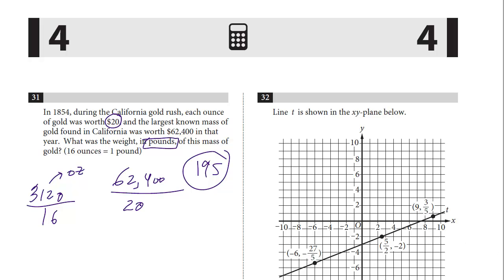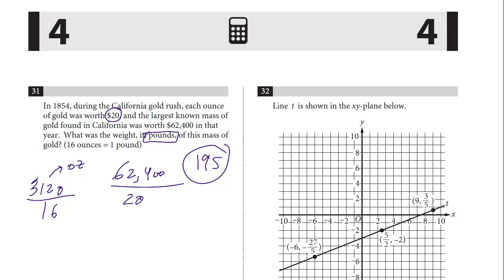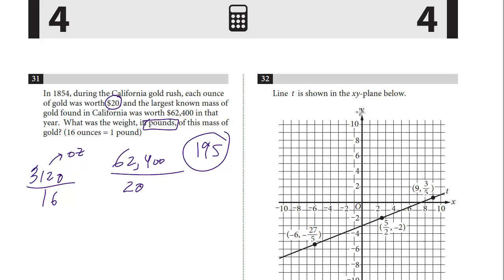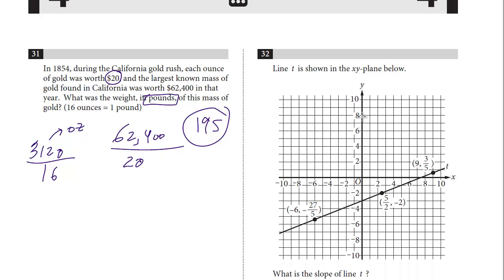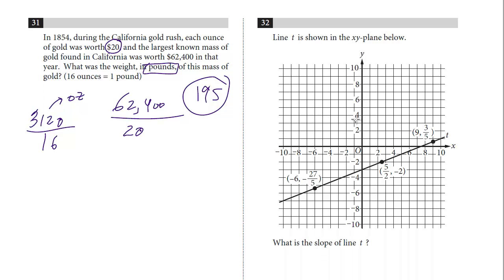Let's take a look at question 32. Line t is shown in the xy plane, and we have to find the slope. Now there's a couple ways to do this. We have points, but these are a little tricky. We have fractions.